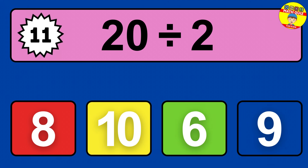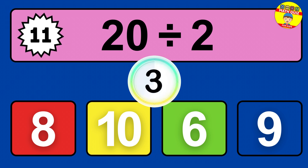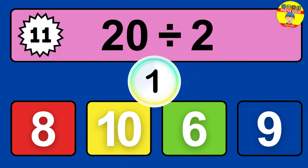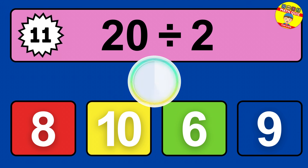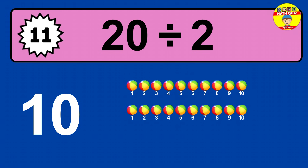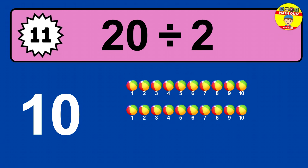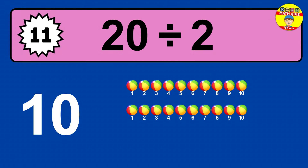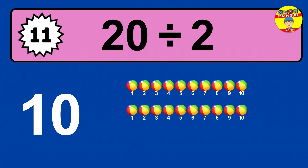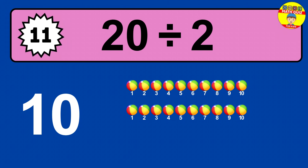20 divided by 2 — time to think. Let's go to the solution. Divide the number 20 by 2. Each group contains 2 units, so dividing 20 by 2 results in 10 equal groups. Thus, the result is 20 divided by 2 equals 10.